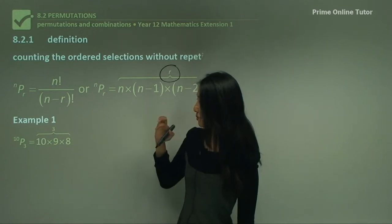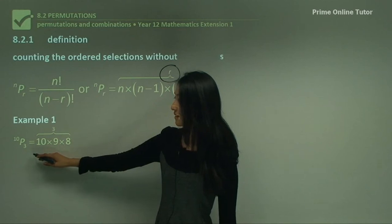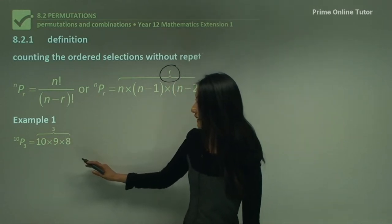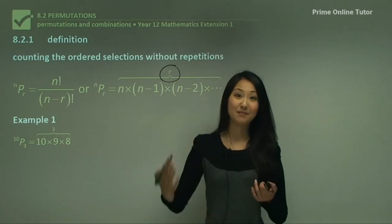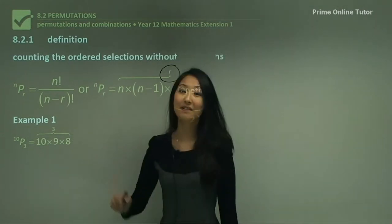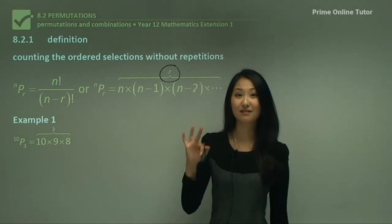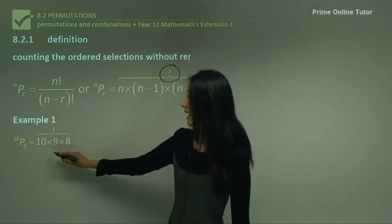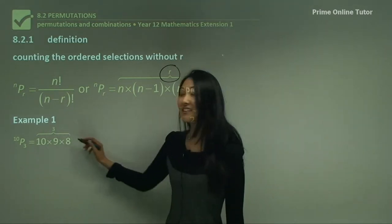In example 1, we have ¹⁰P₃. So what we have here is 10 factorial, which is 10×9×8×7 and so on, but the 3 tells us we only need three numbers. So it's always the first three numbers: 10×9×8, and then we stop. Only the first three.